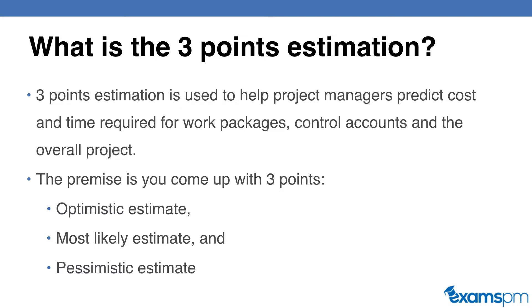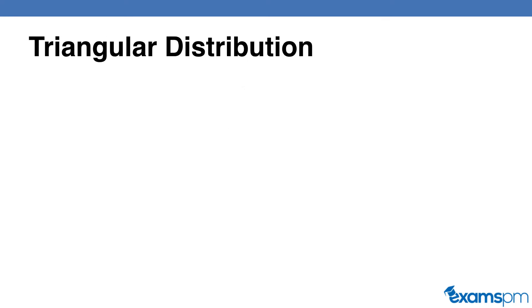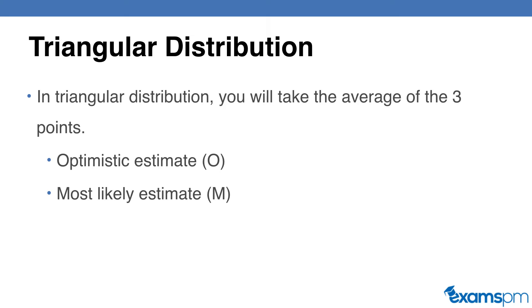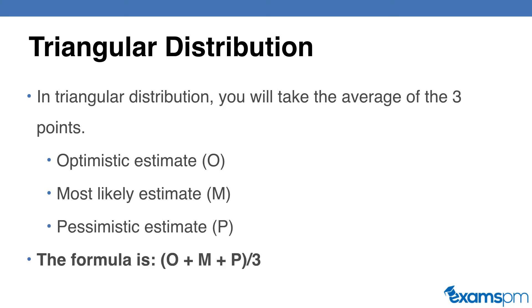Now let's get into the first type of three points estimation, which is called the triangular distribution. In triangular distribution, you simply take the average of the three points — the optimistic, the most likely, and the pessimistic. The formula is that you add up these three values and divide by three. So this is just a simple average.